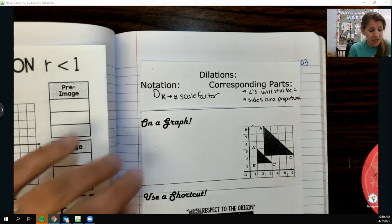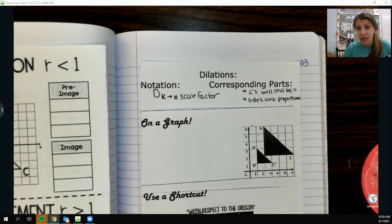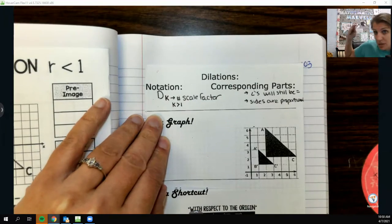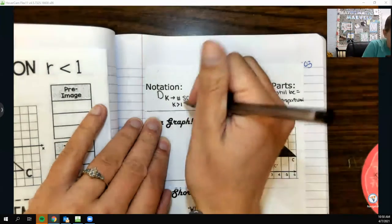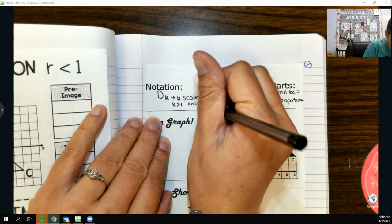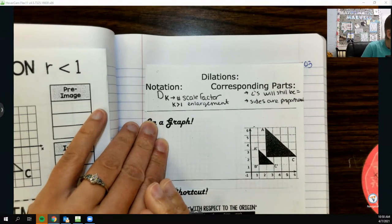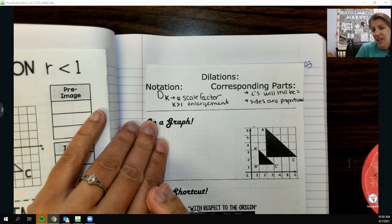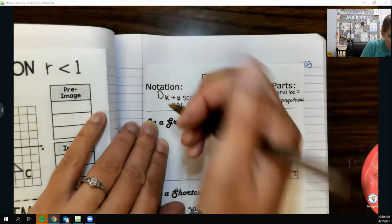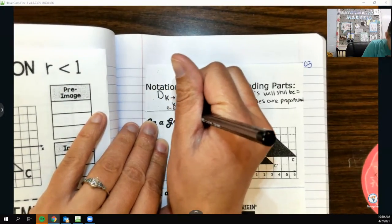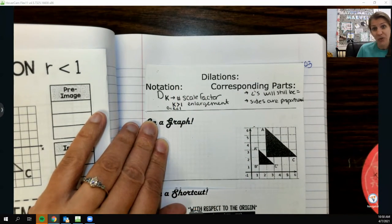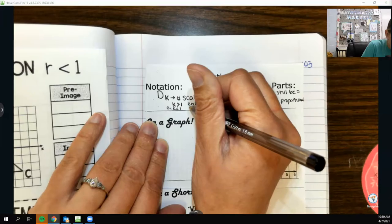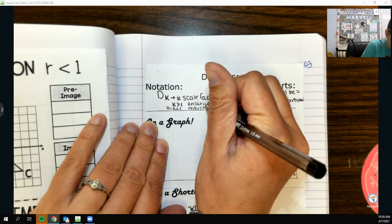Your scale factor is just how much bigger you are or how much smaller you are, like a multiple of that. And the corresponding parts here, the angles will still be congruent or equal. However, sides are not, they are proportional. So they're an amount bigger.